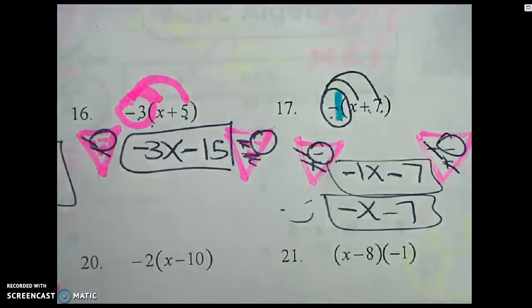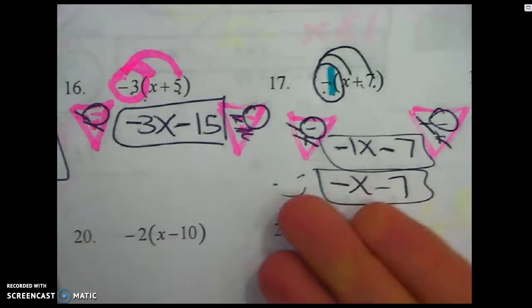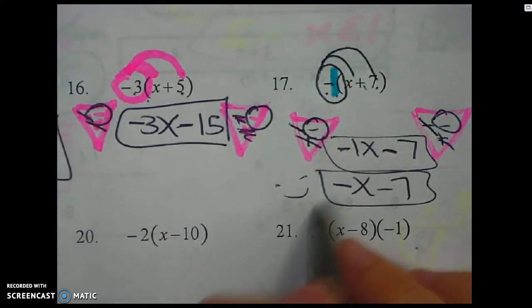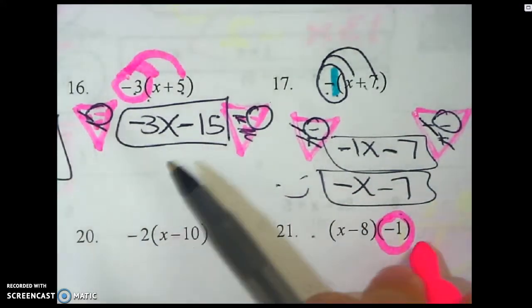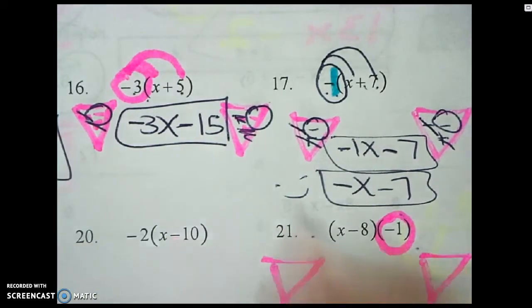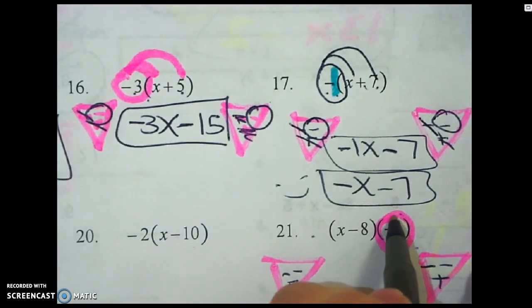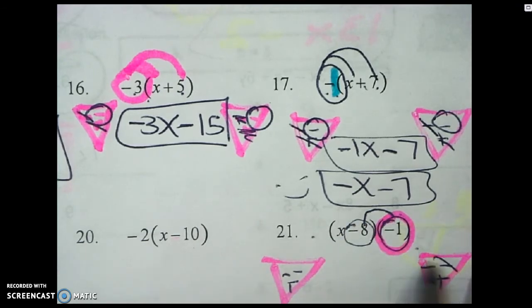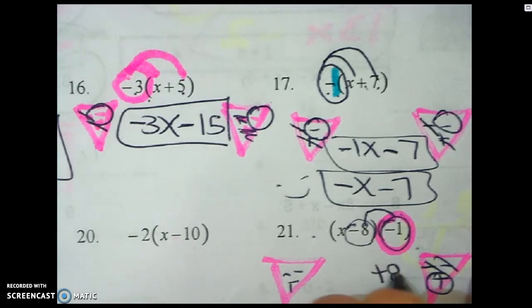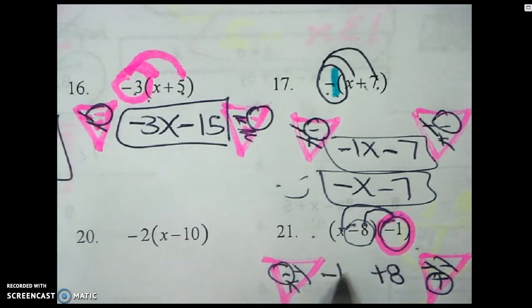Let's do number 21. This time, instead of the number being on the left, the number's on the right — so it's backwards. Instead of giving this way, you're going to give this way. Since this is a negative, I do two triangles. I give the negative to the eight, but that's also a negative, so negative times negative is positive. Then I give a negative to a positive x, and that's negative one x.